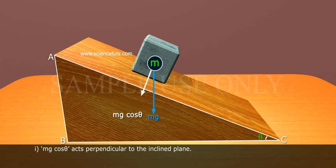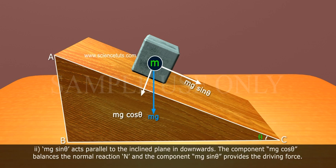1. Mg cos θ acts perpendicular to the inclined plane, and 2. Mg sin θ acts parallel to the inclined plane in downwards. The component Mg cos θ balances the normal reaction N, and the component Mg sin θ provides the driving force.